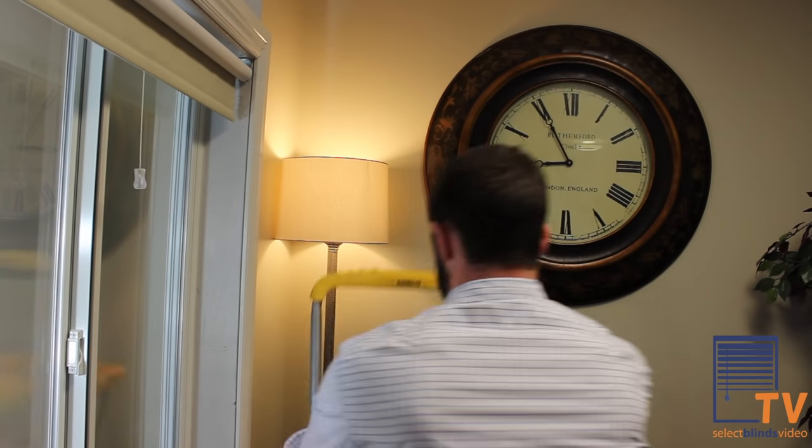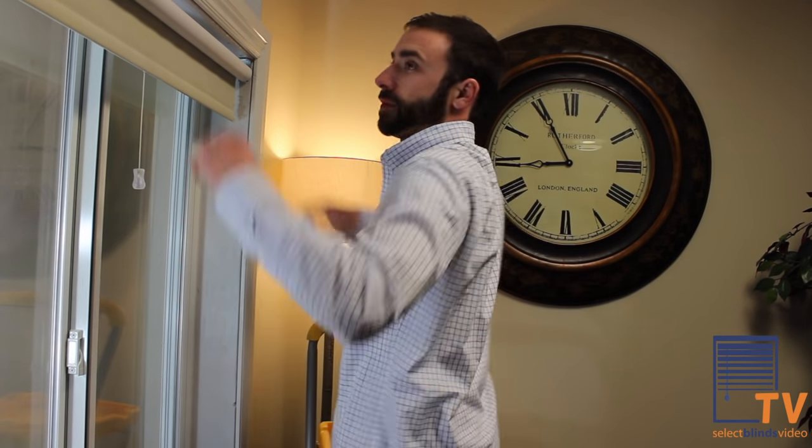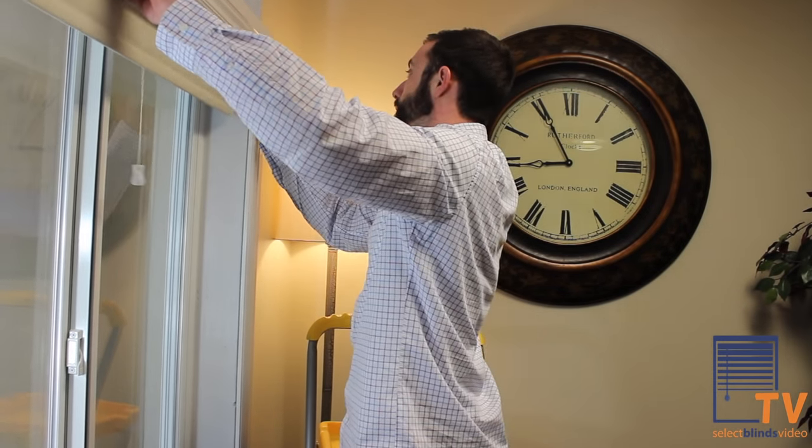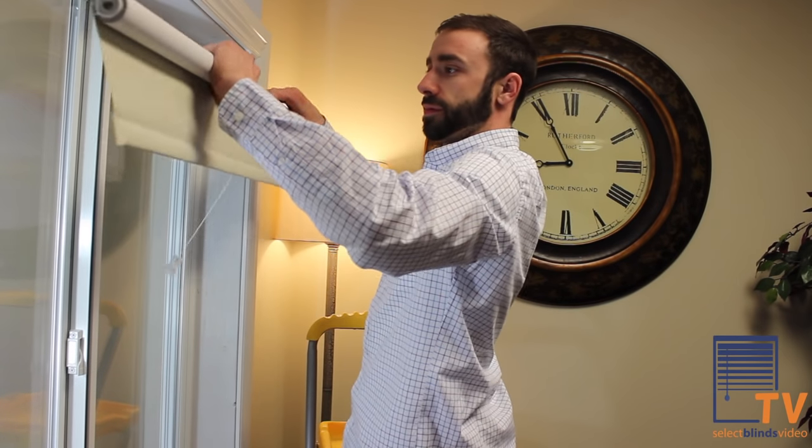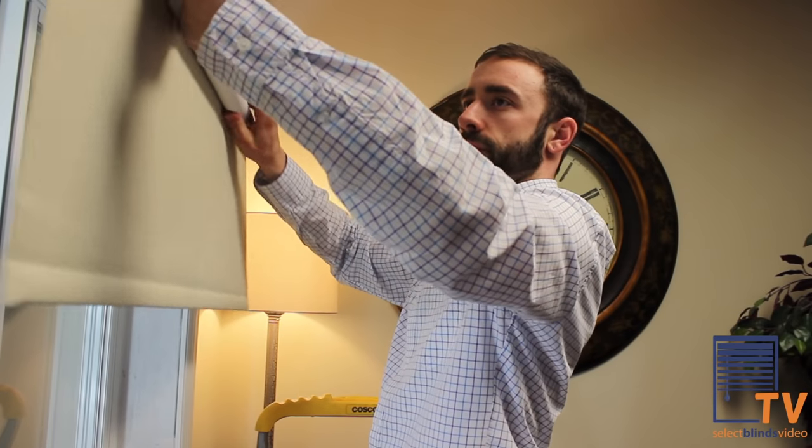If your shade is simply having a hard time staying down or rolls up too fast, that means your spring tension is too high. To resolve this issue, pull the shade out of the window and roll it down about 18 inches by hand.